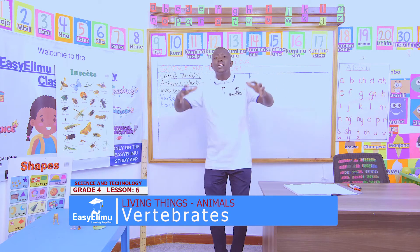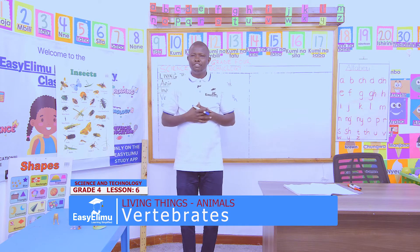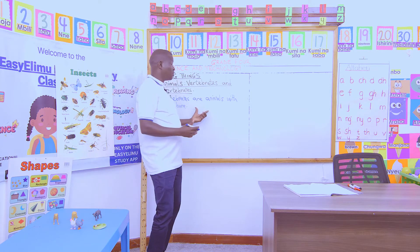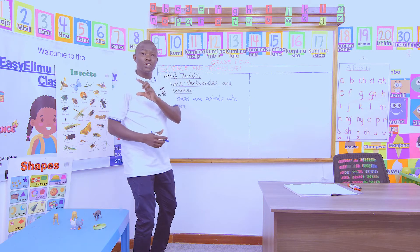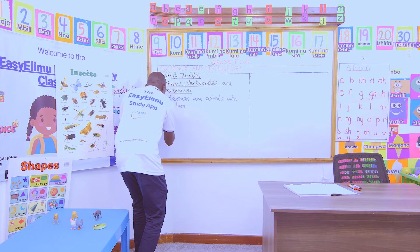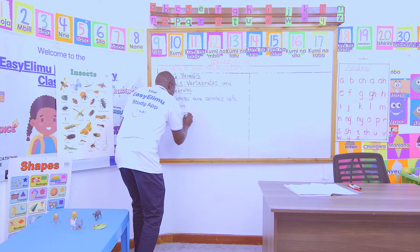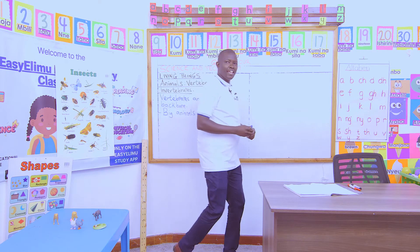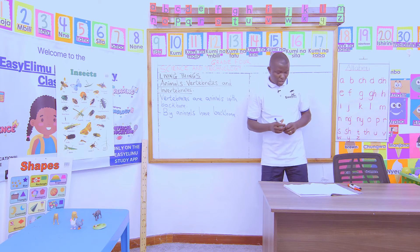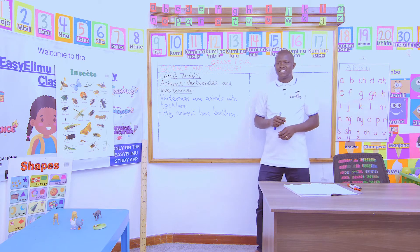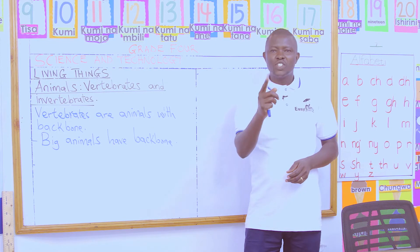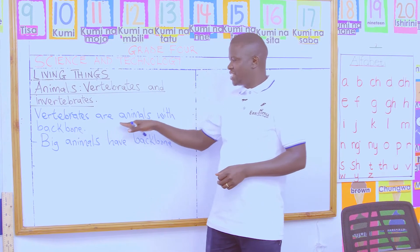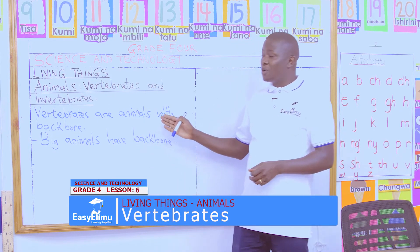Those big animals like human beings, like elephant, a cow, hen — are animals with backbone, because they are big animals. So big animals have backbone, and if they have backbone, we say they are vertebrates. Fellow learners, can you take out your dictionary and look at the meaning of this word? Is it the same as the way I've explained it — that vertebrates are animals with backbone?